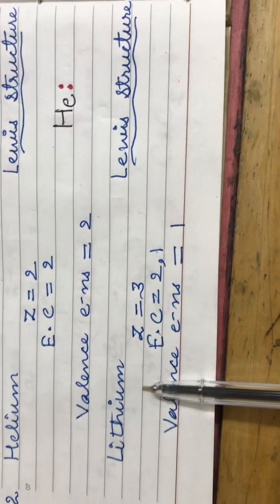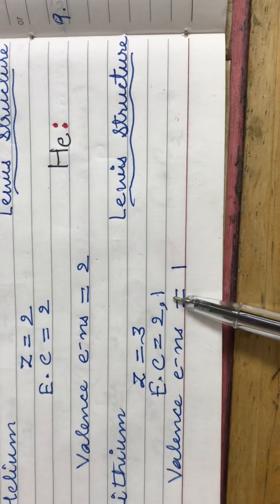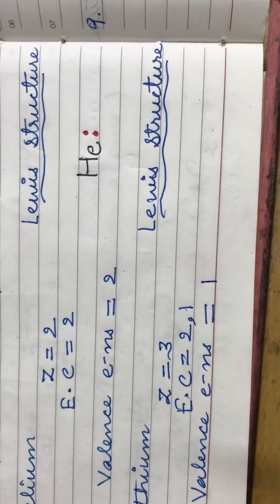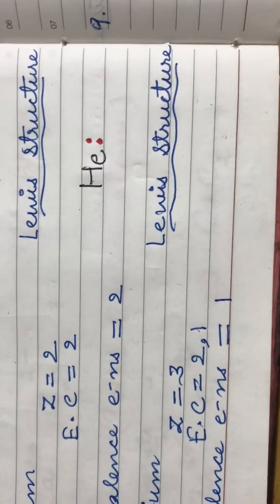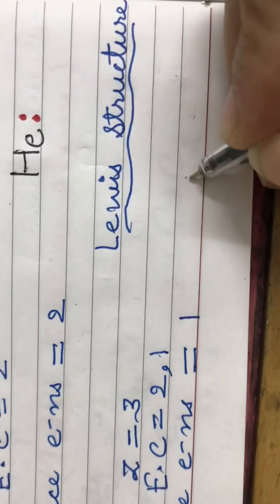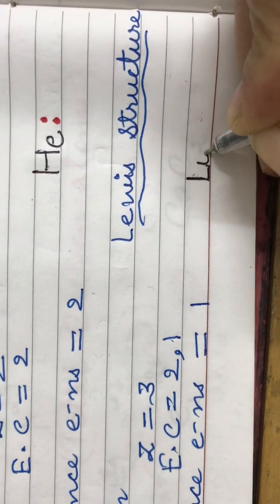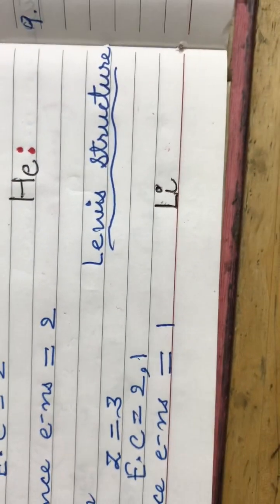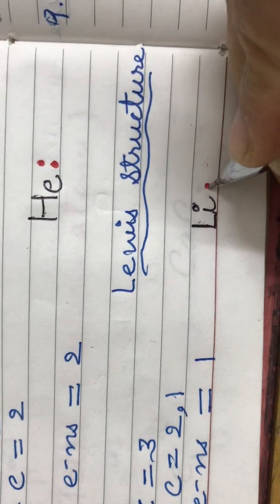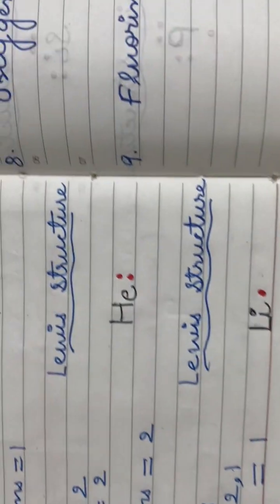Coming to the third element, lithium. It has an atomic number of three. Its electronic configuration is 2,1 and it has one electron in its valence shell. Therefore, the Lewis structure for lithium is written as the symbol Li with one dot for its one valence electron.